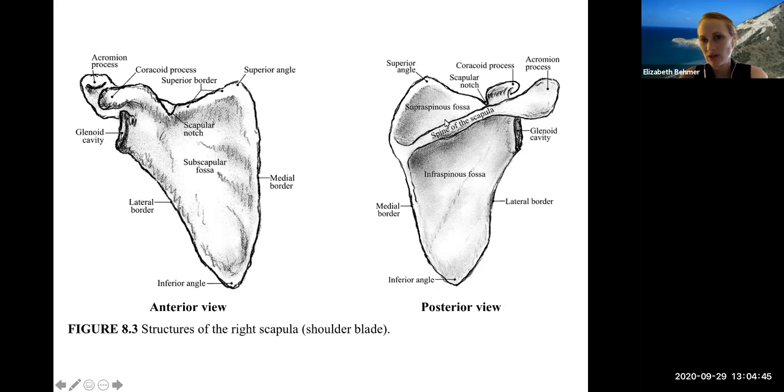Here's the posterior view of the scapula. There's the superior border and the superior angle is the top point. The posterior structures include the spine - you can feel the spine of your scapula. There are fossas, which are depressions above and below the spine: the supraspinous fossa and the infraspinous fossa. The glenoid cavity refers to the space where the head of your humerus will sit in that ball and socket joint.